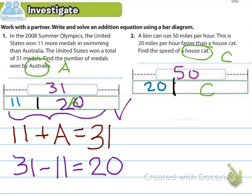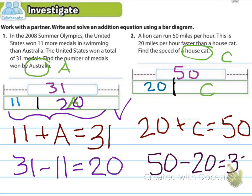Alright, for number two, you'll see that I defined house cat as the variable C. The total is 50, and a part of that is the 20 miles that it runs faster than the house cat. The C is the part that we're looking for. That's how fast the house cat actually can run. So now we need to set up our equation. We've got 20 plus C is going to equal 50, because those two combined will equal 50.